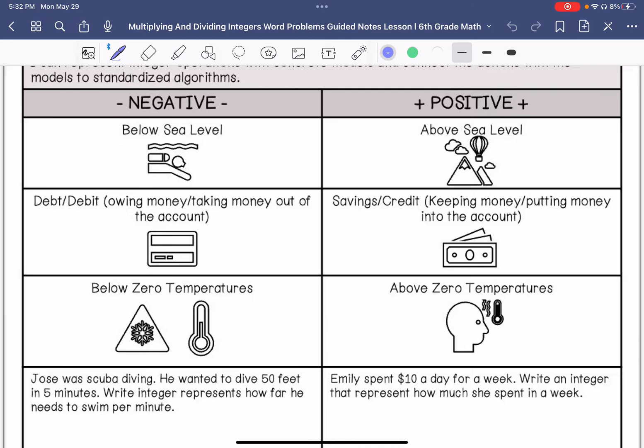And then our keywords for positive are above sea level, savings or credit, keeping money or putting money in the account, and then above zero temperatures.